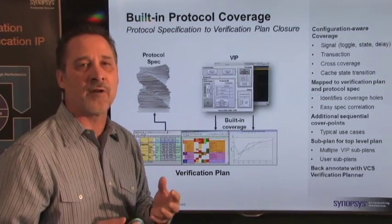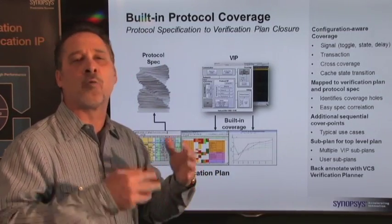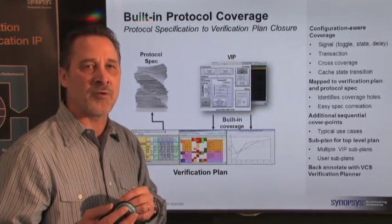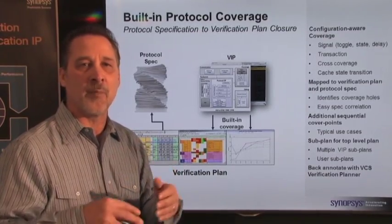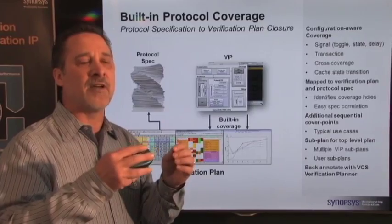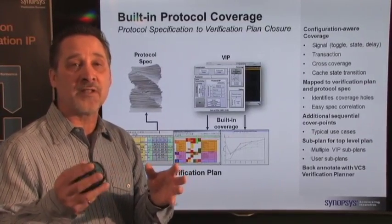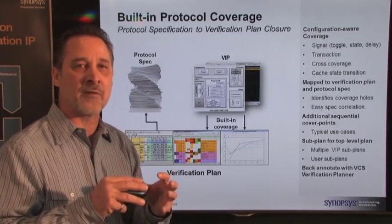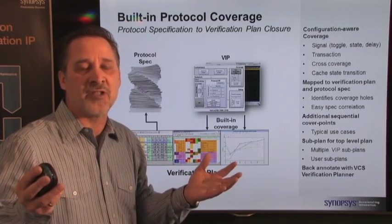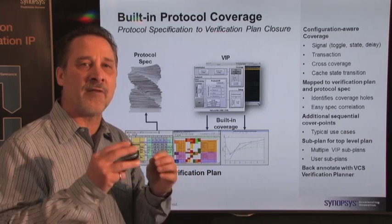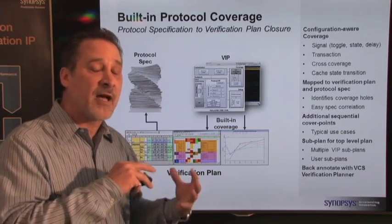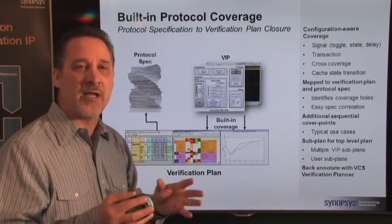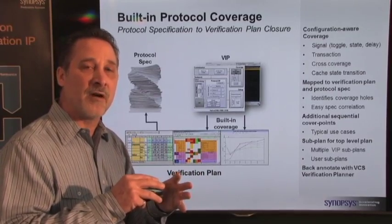What do I mean by configuration-aware functional coverage? At the very gross level, in the case of USB, you have a host versus device — that's pretty easy. I have to have some functional coverage that's only host or device based. Maybe it's UTMI versus ULPI, narrowing it down further. Maybe I have a specific sub-configuration for my endpoints that narrows it down even further. When you implement your functional coverage, you want to make sure it understands that particular configuration, because you don't want false holes for configurations that don't pertain to you — only what's applicable to your actual design under test.